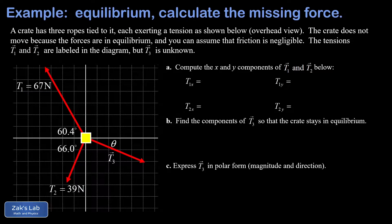In part a we start by getting the x and y components of our known tensions, starting with t1—that's our 67 newton tension pointing 60.4 degrees above the horizontal. This vector points to the left and upward. Its x component is going to be negative because it points to the left.